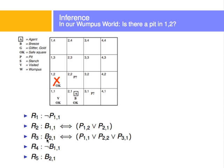These are the rules we have. There are no pits in 1,1 because that's where we started. If I feel a breeze in 1,1, that means there's a pit in 1,2 or a pit in 2,1. If I feel a breeze in 2,1, that means there's a pit in 1,1, 1,2, 2,2, or 3,1. I know there's no breeze in 1,1, and I know there's a breeze in 2,1.